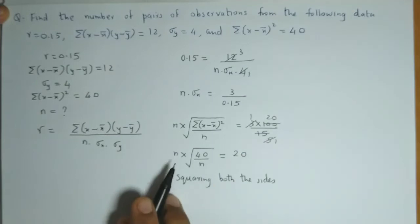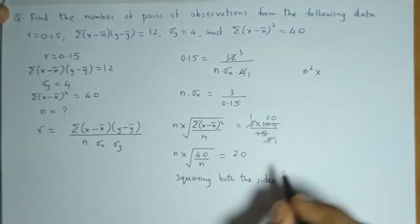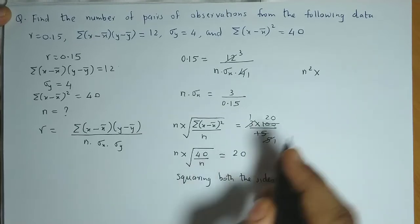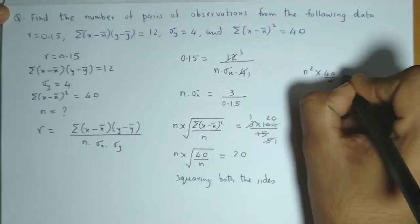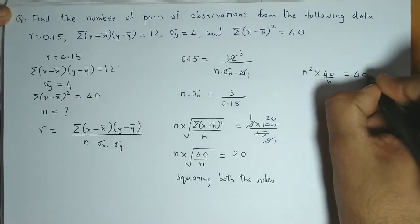And we obtain n² times 40 by n. The root will go away, equals 20 square. 20 square is 400.